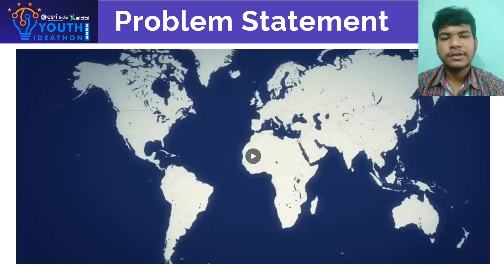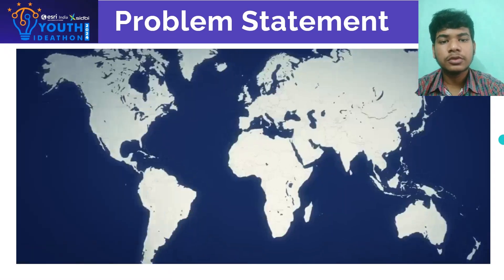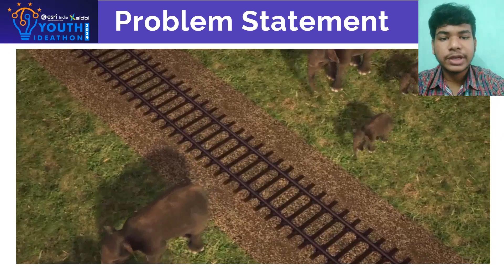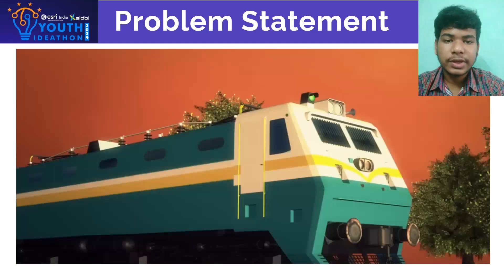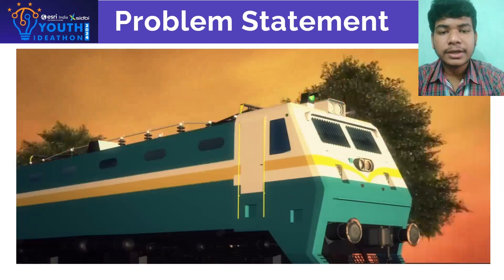In the misty dawn, a herd of elephants led by their wise matriarch slowly moved through the forest path. The ground shook with the distant rumble of an approaching train, but the elephants didn't notice. As the train drew near, its loud screech warned of the danger.